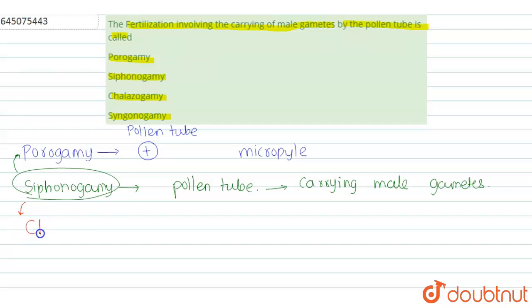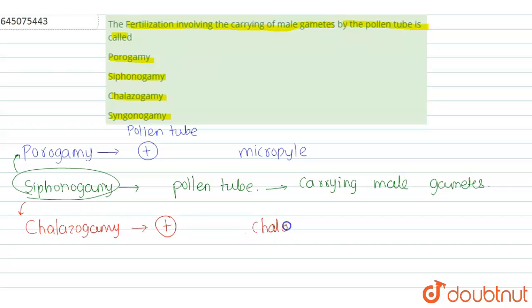As porogamy is one type, chalazogamy is another type of siphonogamy, in which a pollen tube is formed and the male gametes are released at the chalazal end of the embryo sac. This type of pollen tube entry is called chalazogamy.